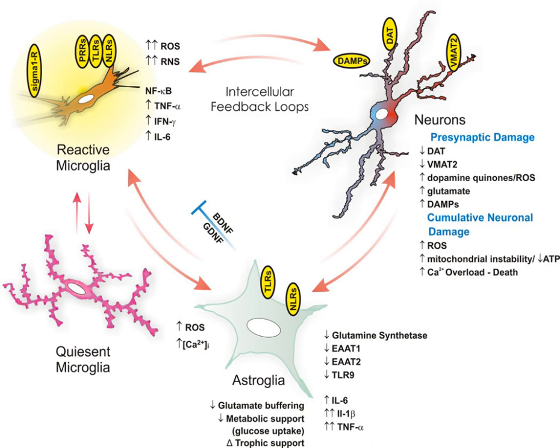The neuroimmune system is a system of structures and processes involving the biochemical and electrophysiological interactions between the nervous system and immune system which protect neurons from pathogens. It serves to protect neurons against disease by maintaining selectively permeable barriers, e.g., the blood-brain barrier and blood-cerebrospinal fluid barrier, mediating neuroinflammation and wound healing in damaged neurons, and mobilizing host defenses against pathogens. The neuroimmune system and peripheral immune system are structurally distinct.